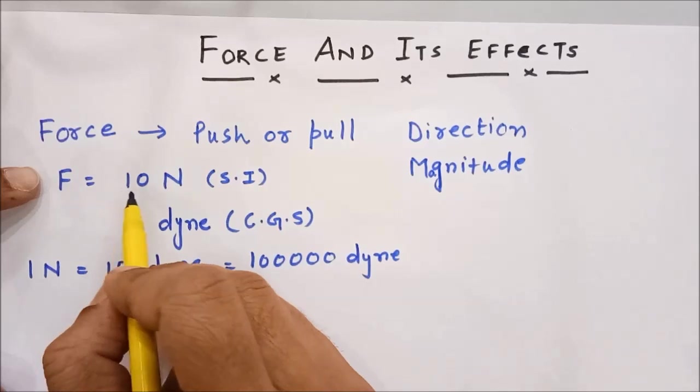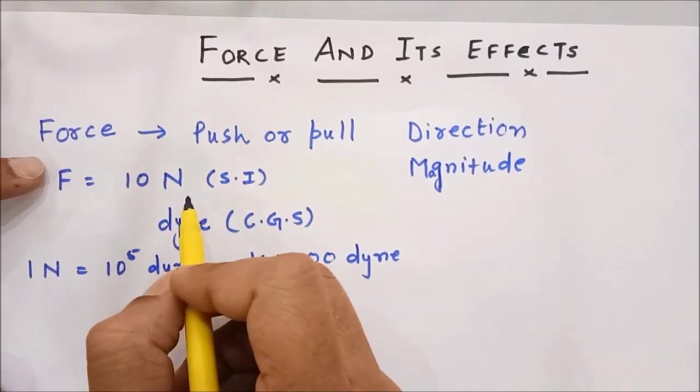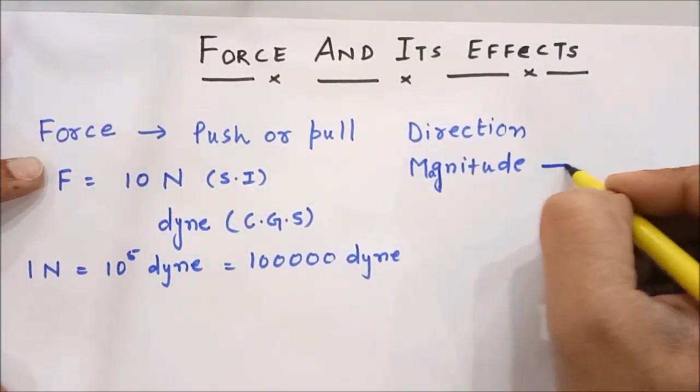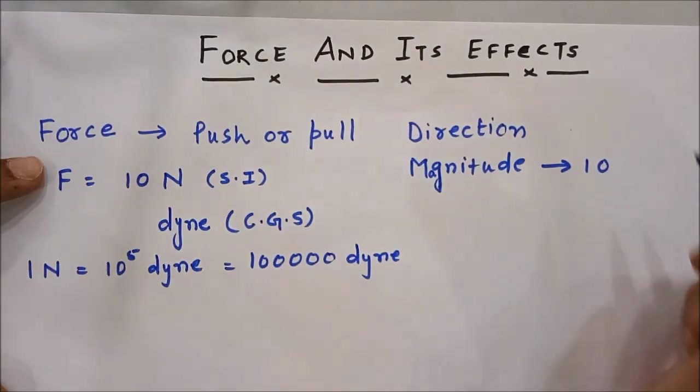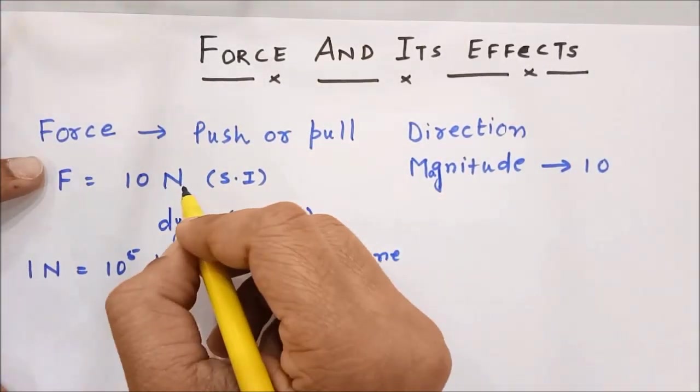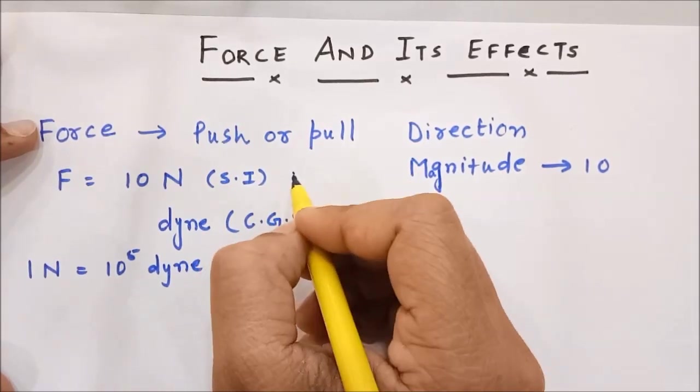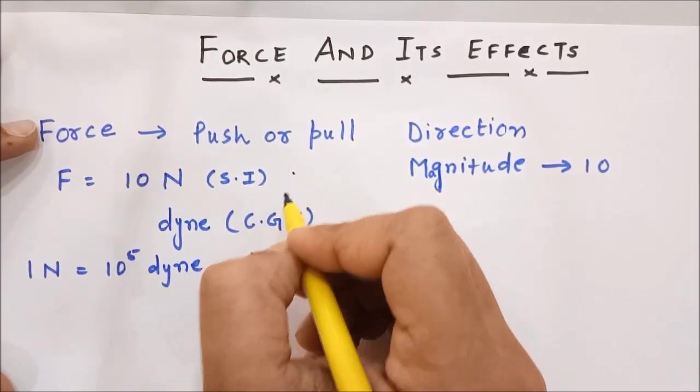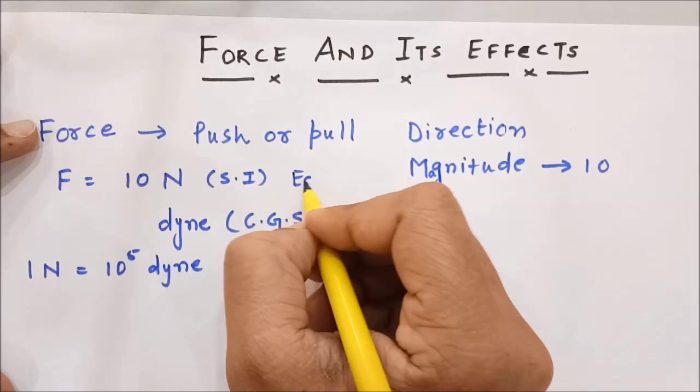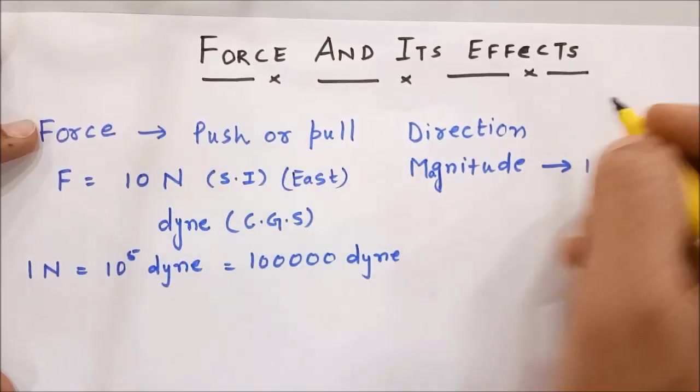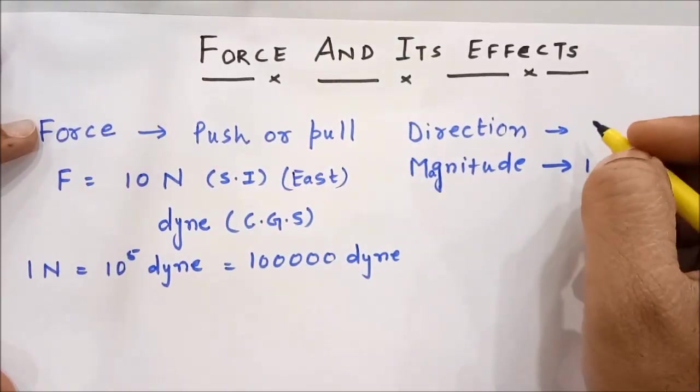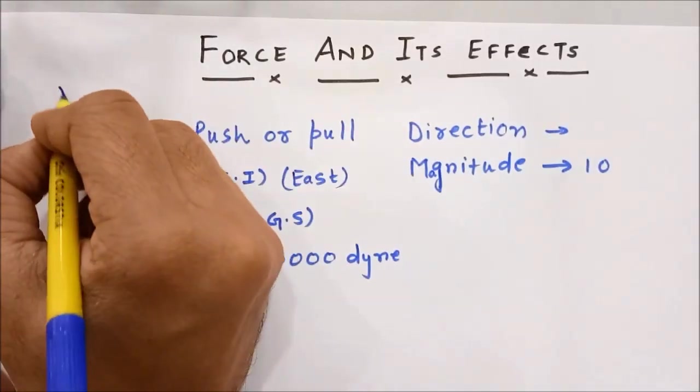If you exert a force of 10 Newton on a body, 10 is said to be the magnitude and direction is what we are supposed to specify. For example, I am exerting a force of 10 Newton on a body towards east. Then that east will be considered in direction, and that is why force is a vector quantity.